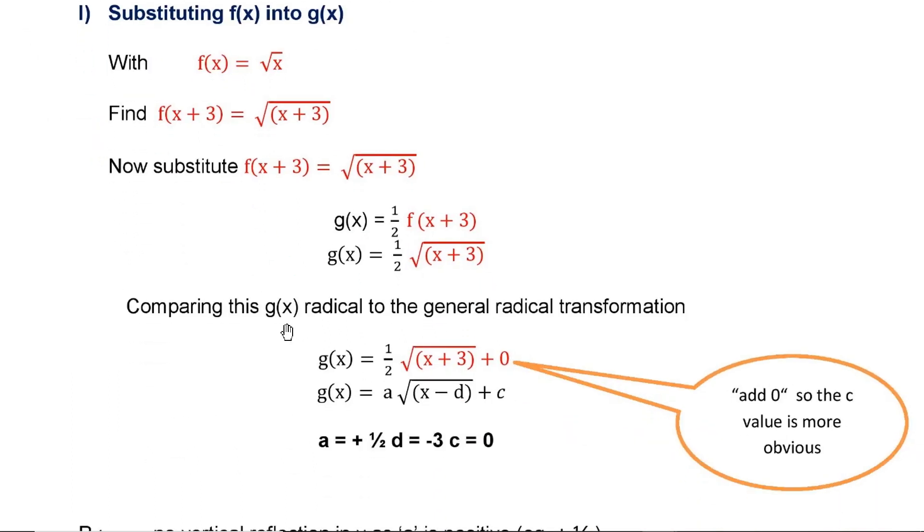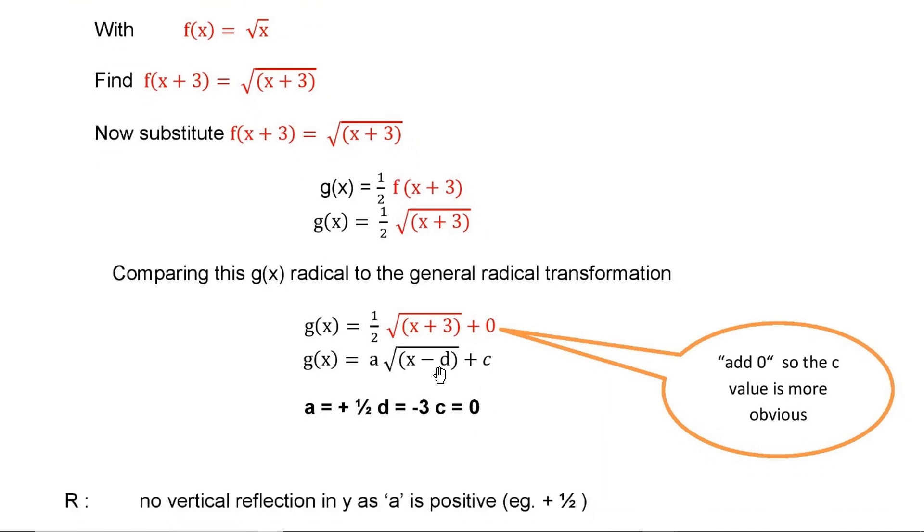When we compare this g(x) radical to the general radical transformation, we see that this is ½√(x+3) + 0. Let us compare g(x) with a√(x-d) + c. This is the standard form. Here we have k also in between. Since there is no c here, we just add a 0 so that the c value is more obvious.